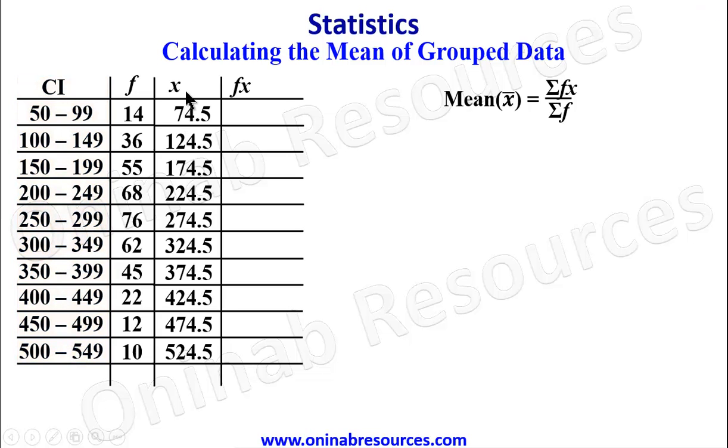So we have created the column for x. We can then go ahead to find fx, which means the frequency multiplied by our x. So the first class interval: 14 times 74.5 gives 1043, 36 times 124.5 gives 4482, 55 times 174.5 gives 9597.5, 68 times 224.5 gives 15266.